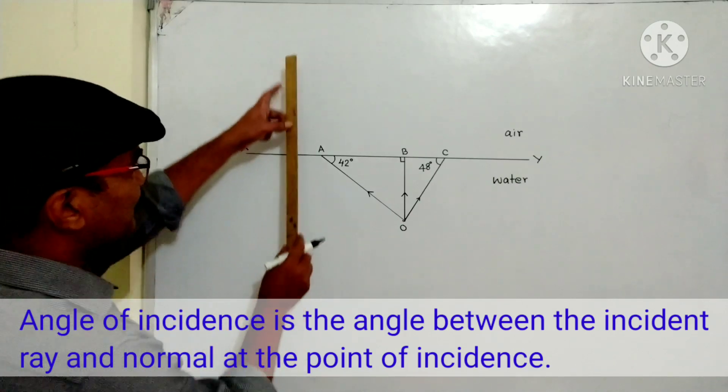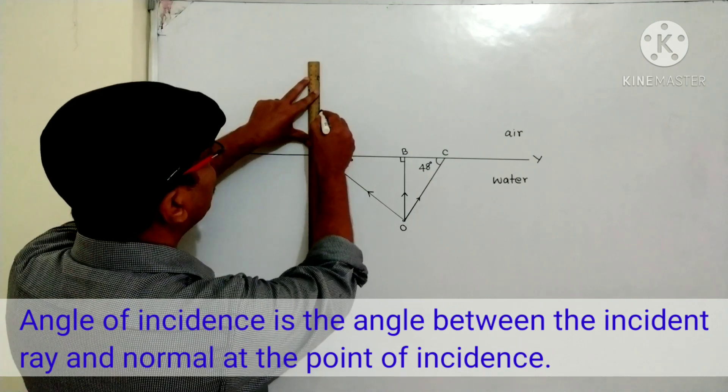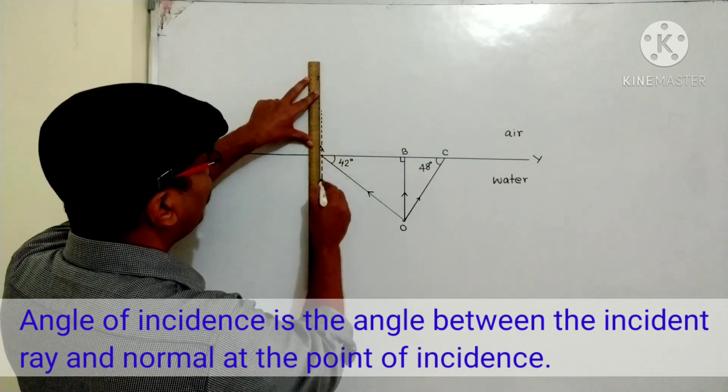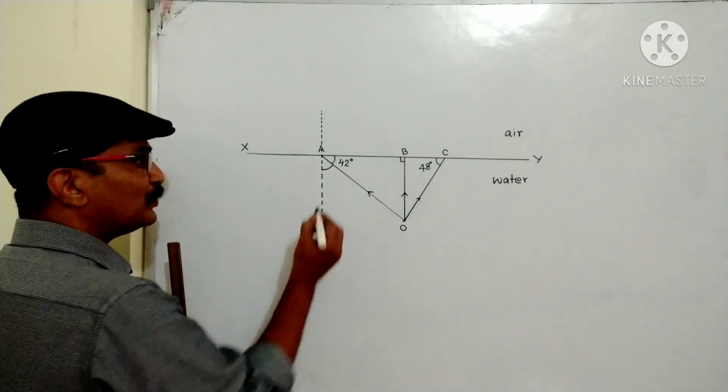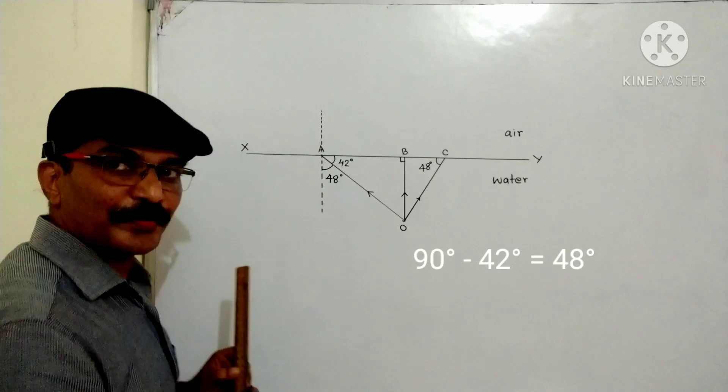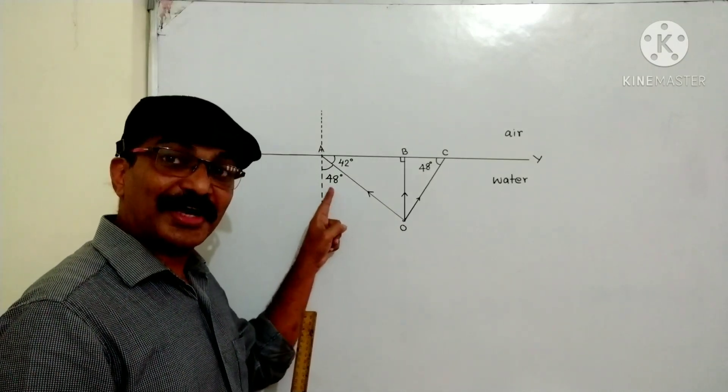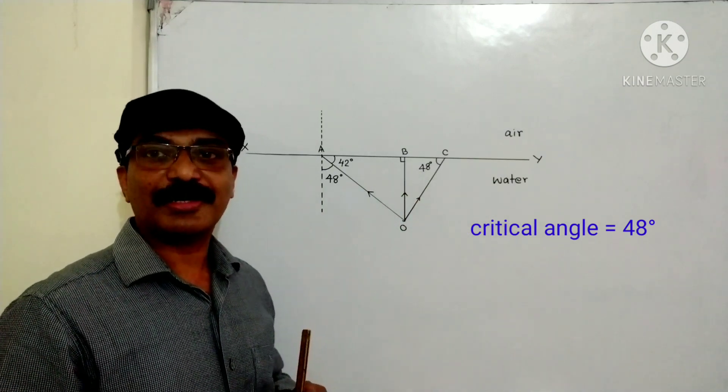First, let us draw that. This angle will be equal to 48 degrees. 48 degrees is the angle of incidence here, which is equal to the given critical angle.